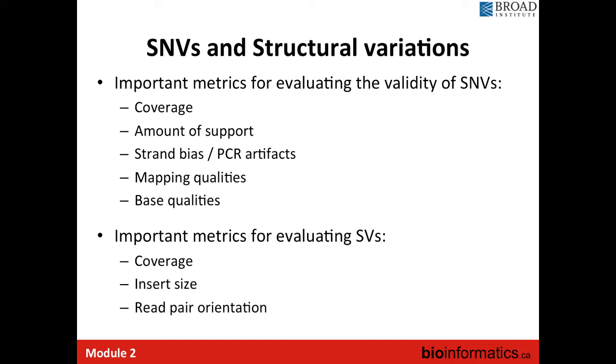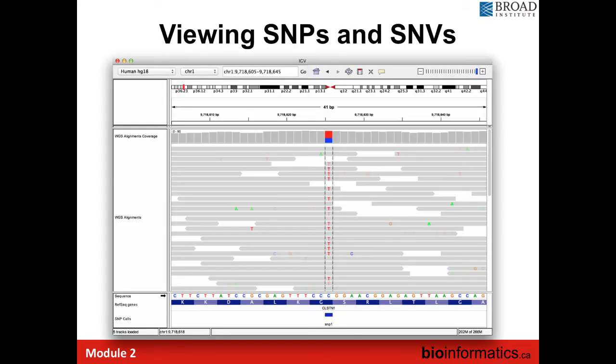When looking at SNPs or SNVs, here is an example of a good SNP. You can see a mismatch — a T to a C. The reference genome has a C, as shown at the bottom. You have a bit more than 50% of reads that have a T, and they all have a strong red color, so we're confident it's a real mutation from T to C. If you load the dbSNP track at the bottom, it corresponds to a known SNP because there is an annotation at the bottom.